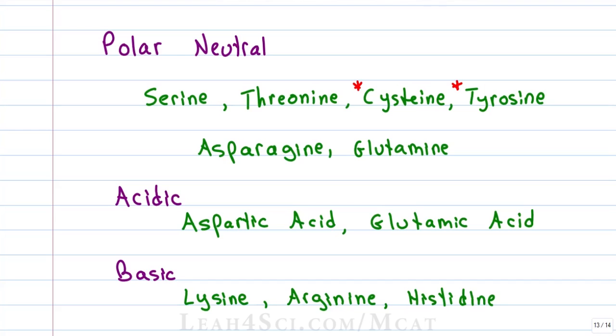The acidic amino acids include aspartic acid and glutamic acid, which are also called aspartate and glutamate for their conjugate base names. The basic amino acids include lysine, arginine, and histidine.